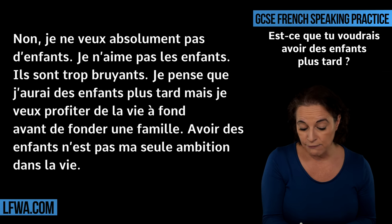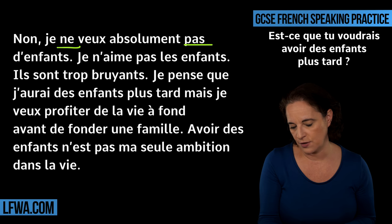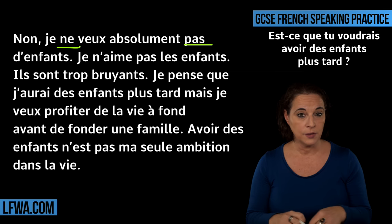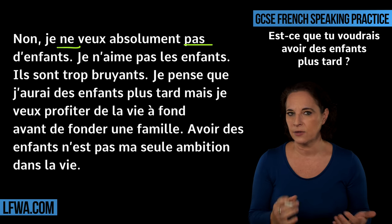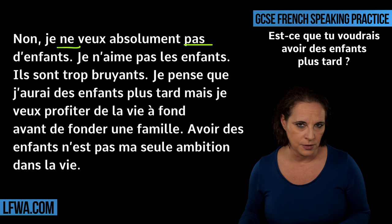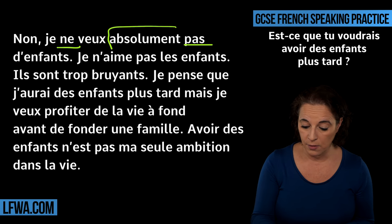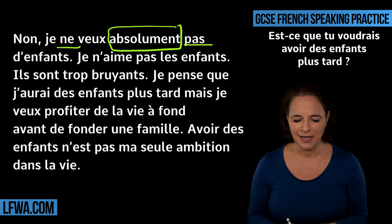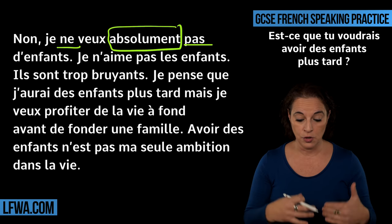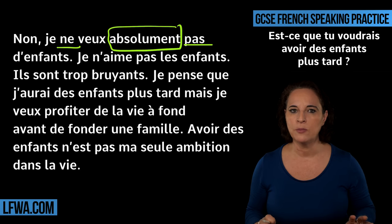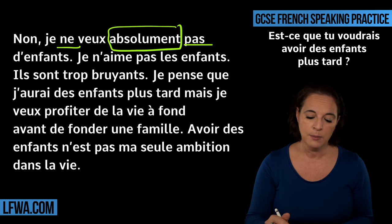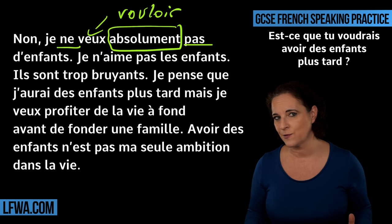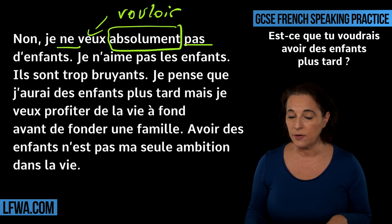Have a look at this structure: je ne veux absolument pas d'enfants. It's really good to use a negation because it adds dimension to your answer and makes it a little bit harder. If you show the examiner that you can make complex sentences, it's an added bonus. Here, I'm adding more complexity by adding an adverb: je ne veux pas becomes je ne veux absolument pas — I absolutely do not want. Please learn vouloir in the present tense by heart. Pouvoir, vouloir, devoir — all these verbs are really useful.